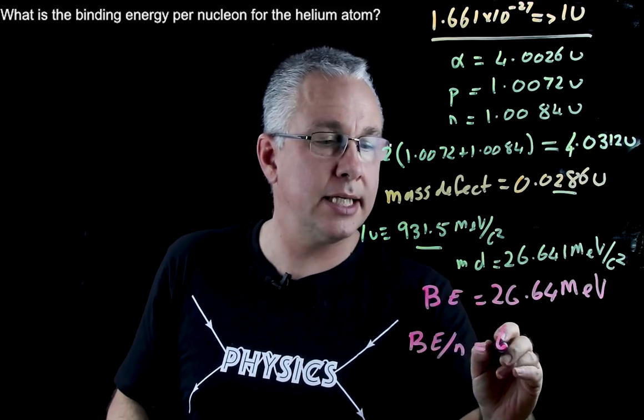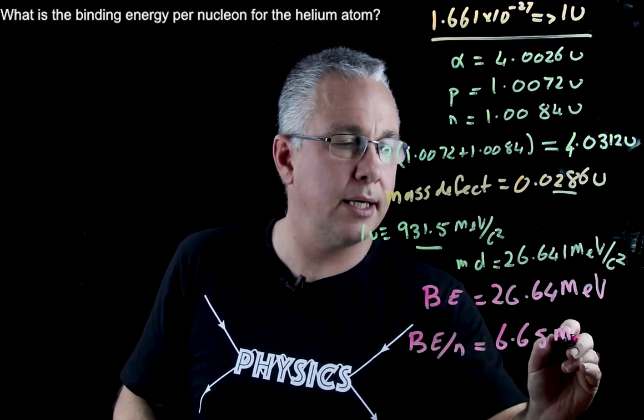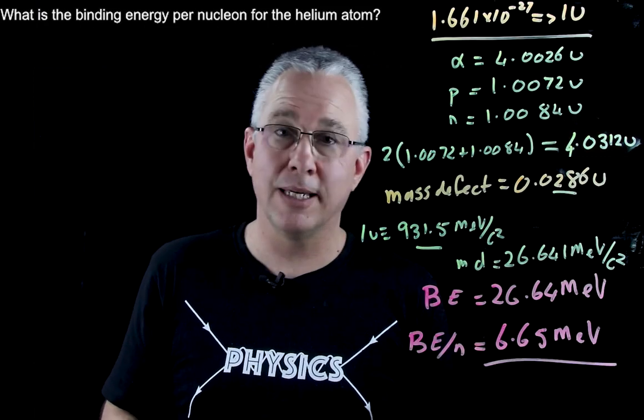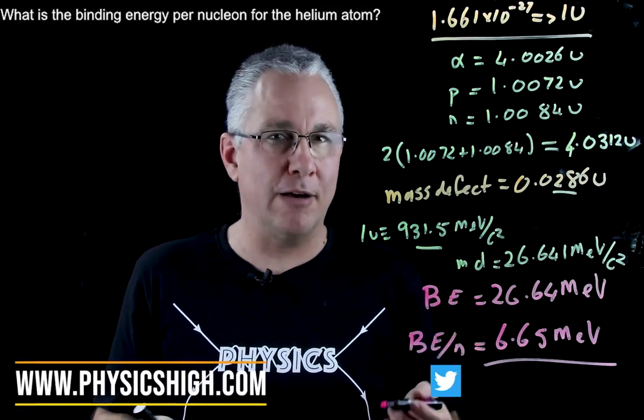You're going to get 6.65 mega electron volts. So there's the binding energy per nucleon for the alpha particle.